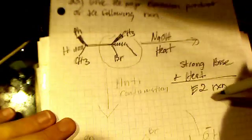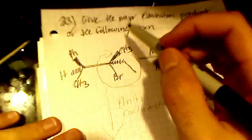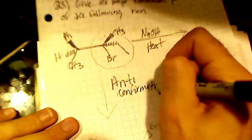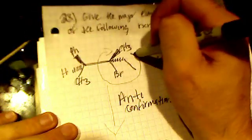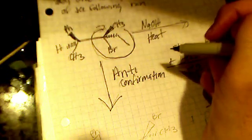So if I want elimination, I want the anti-conformation, right? I want the hydrogen—this hydrogen and this bromine—to be anti to each other. So what I did is I just took this part of the molecule and I rotated it, I guess I rotated it 120 degrees so that they would be anti.